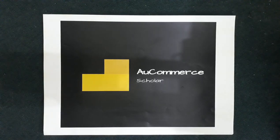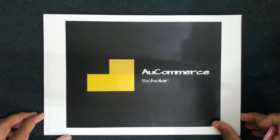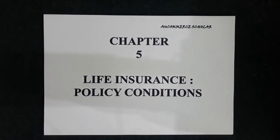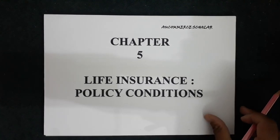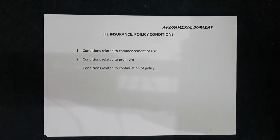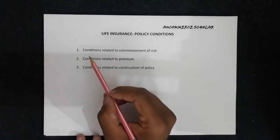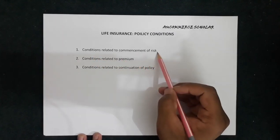Hello friends, this is Sahil Roy and I welcome you all to my YouTube channel AU Commerce Scholar. Today we are going to start Chapter 5 of Life Insurance. The name of the chapter is Life Insurance Policy Conditions. Life insurance policy conditions have been divided into three parts: conditions related to commencement of risk,